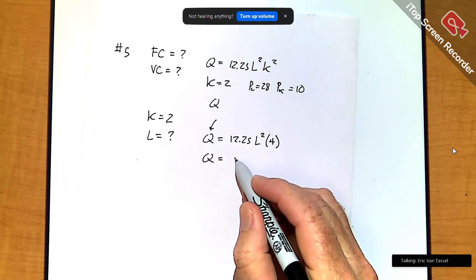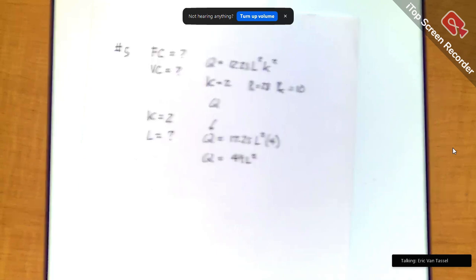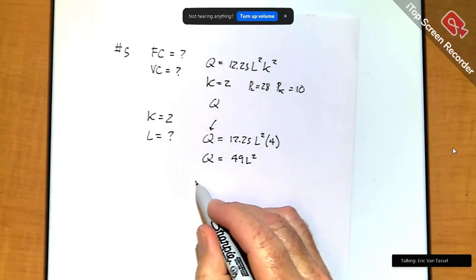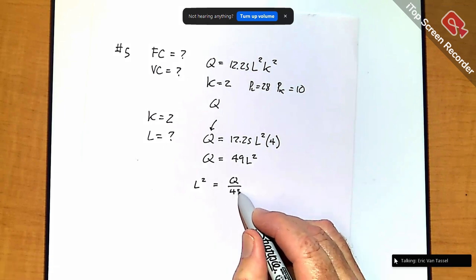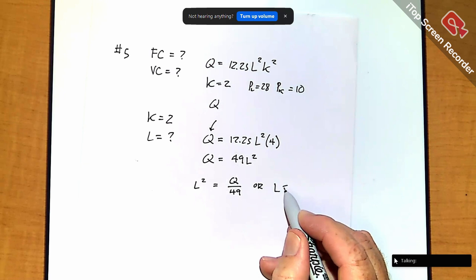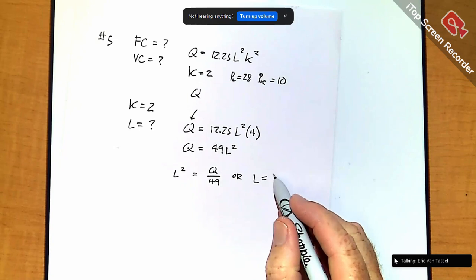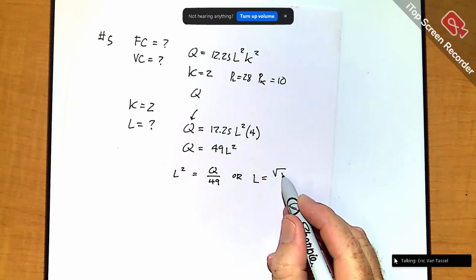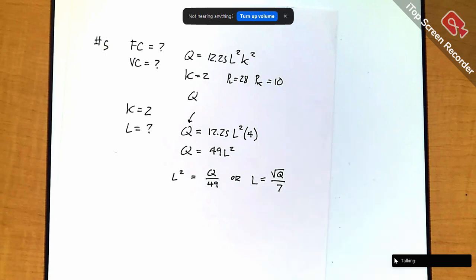a nice number. So, this is 49 times L squared. Divide both sides by 49, so L squared equals Q over 49, or if I take the square root of both sides, I have to take the square root of Q, and then the square root of 49, which is 7. So, that would be my conditional factor demand for labor.